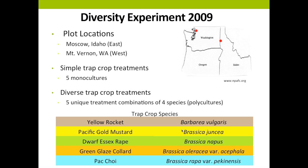The crucifer flea beetle is a ubiquitous pest both east and west of the Cascade Mountains, so we had two plot locations: one east in Moscow, Idaho (warm and dry summers) and one west in Mount Vernon, Washington (cool and wet summers). We had simple trap crop treatments consisting of five monocultures of our trap crop species, and diverse trap crop treatments consisting of five unique treatment combinations of four species. Our trap crop species were chosen based on grower recommendation and literature, and included Yellow Rocket, Pacific Gold Mustard, Dwarf Essex Rape, Green Glaze Collard, and Bok Choy.